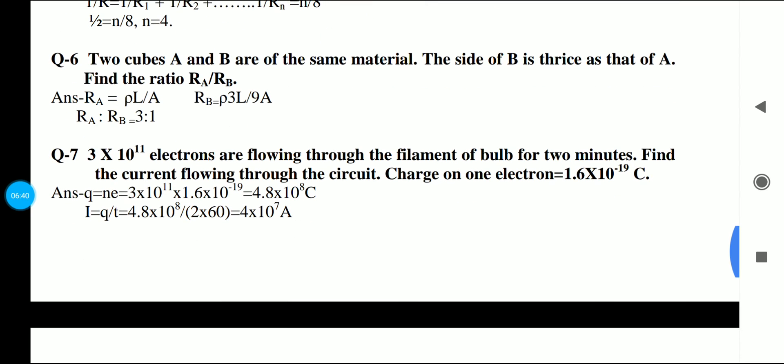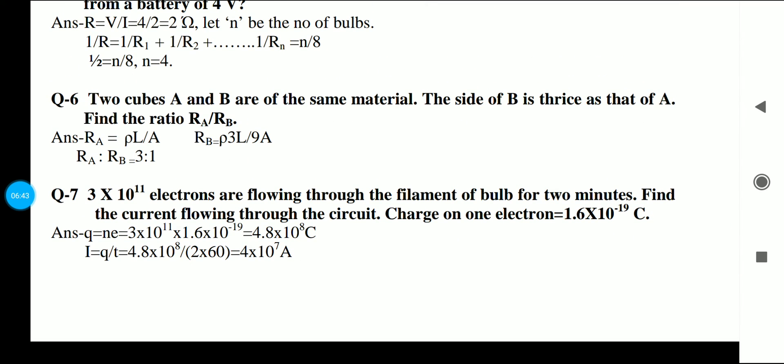This is a very good question. Two cubes A and B are of same material. Side of B is thrice as that of A. Find the ratio RA divided by RB. There are two cubes here, same material, but the B side is thrice as A. First of all, we will write the resistance formula: Rho L upon A. The resistance of B, the length of A is L, so the length of B is 3L. And the area will be 9L squared. We will find RA upon RB, and it will be 3 ratio 1.